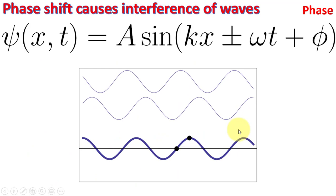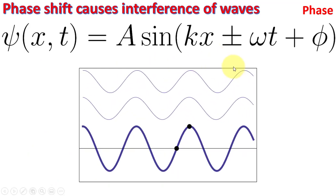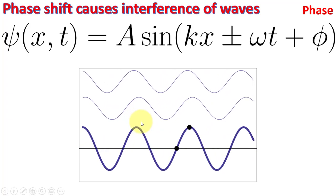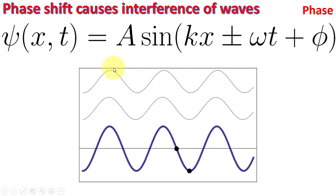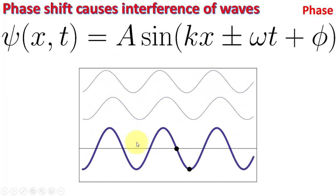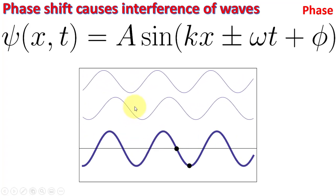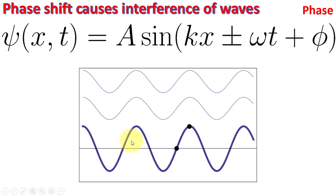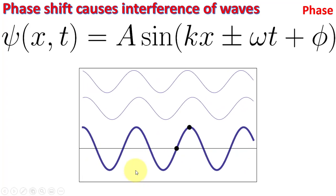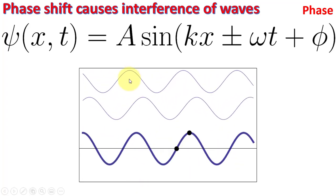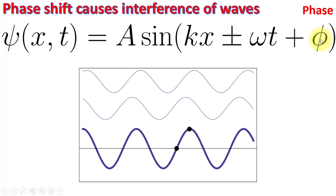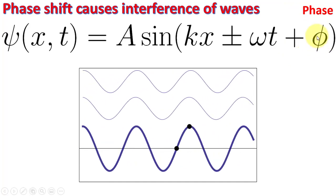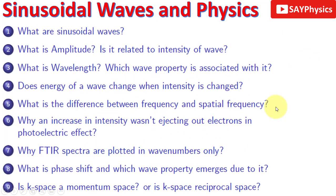When two or more waves have different phases, they cause interference. When crest meets crest or trough meets trough, the wave is enhanced (constructive interference). When crest meets trough, we get a straight line — destructive interference. So phase shift in waves causes wave interference.